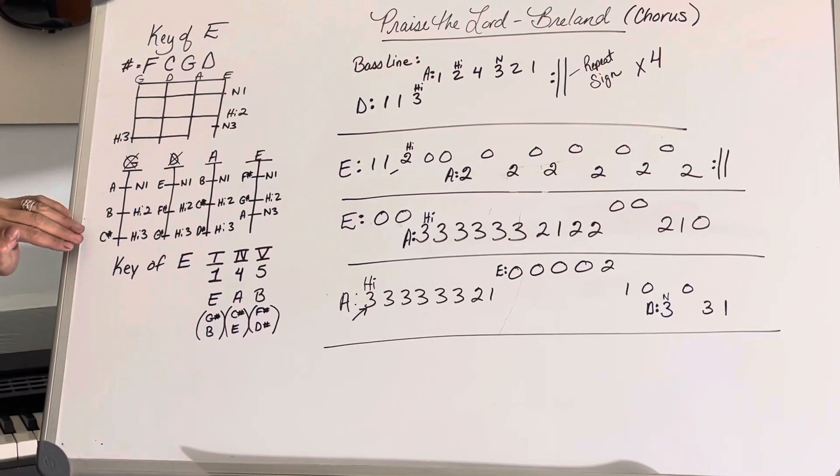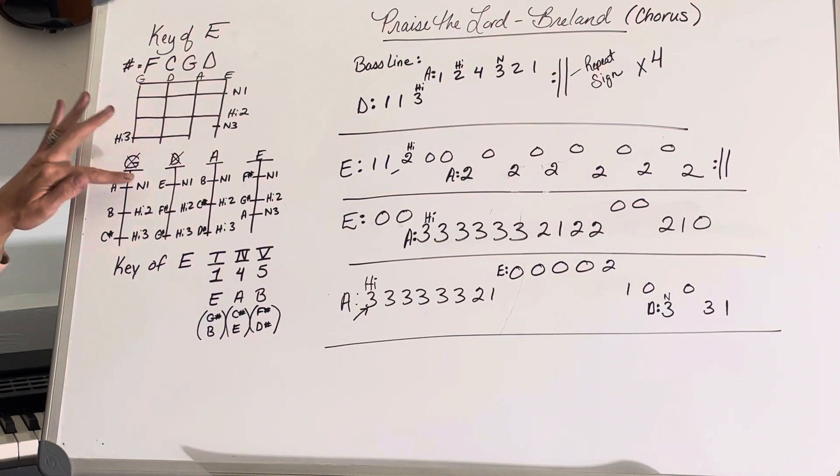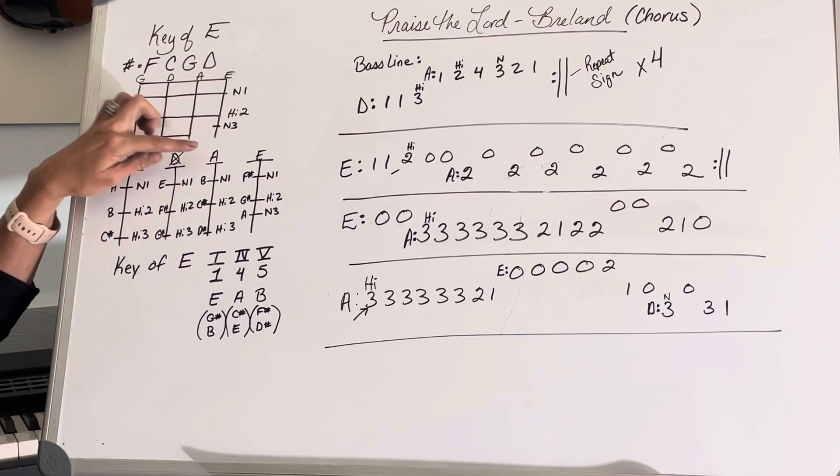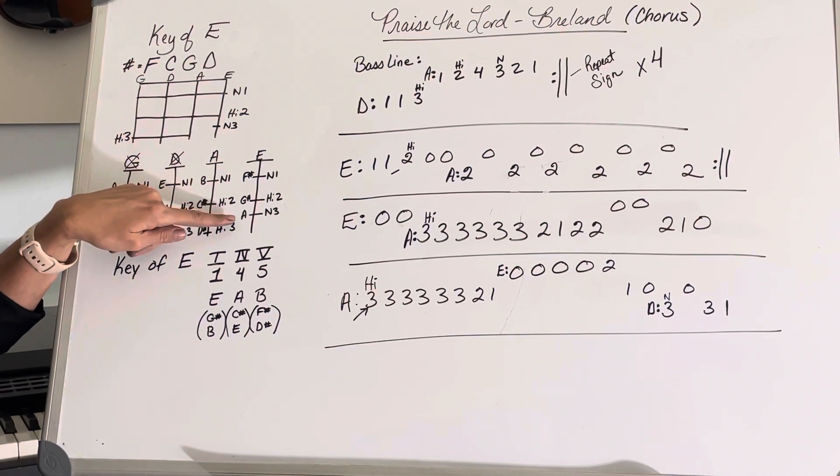Here's it broken out with note names: A, B, C sharp. We have a D sharp, but we're not going to worry about that. E, F sharp, G sharp, A, B, C sharp, D sharp, E, F sharp, G sharp, and then A.